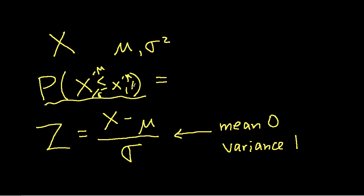I make a mess, but what I get is the probability that X minus mu over sigma is less than or equal to some value x1 minus mu over sigma.